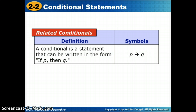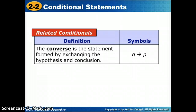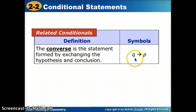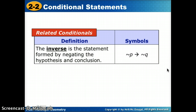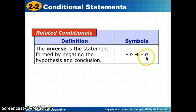Now we'll use that to create other types of statements. The first is the converse: to create the converse, flip the hypothesis and conclusion. Instead of 'if P then Q,' we say 'if Q then P.' The next is the inverse: keep them in order but negate both the hypothesis and conclusion. Instead of 'if P then Q,' we say 'if not-P then not-Q,' adding the word 'not' to both.